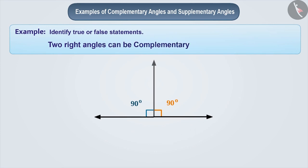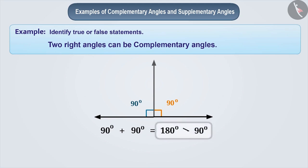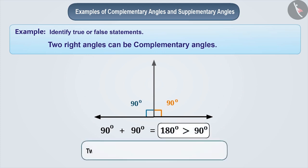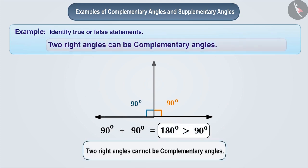Two right angles cannot be complementary because their sum is 180 degrees, which is greater than 90 degrees. Therefore, two right angles can never be complementary angles, and the given statement is false.